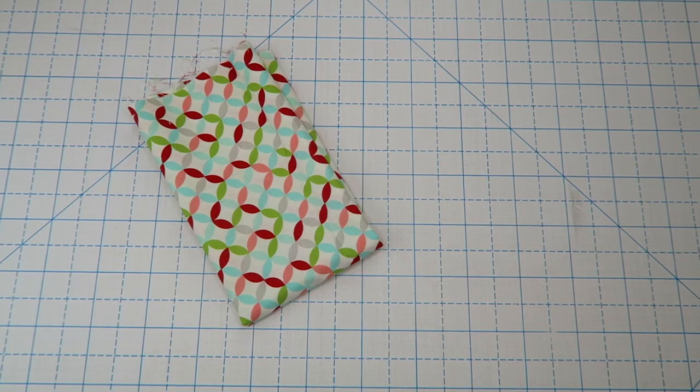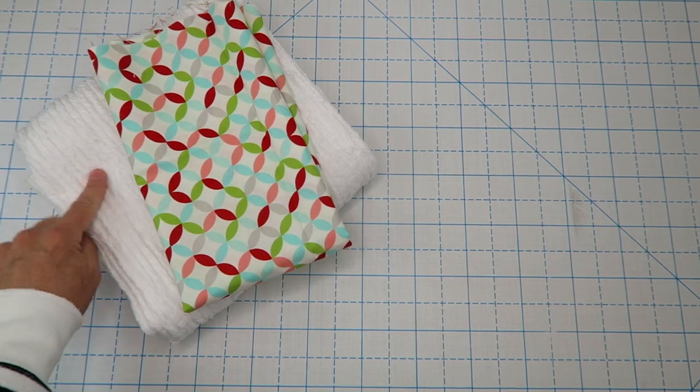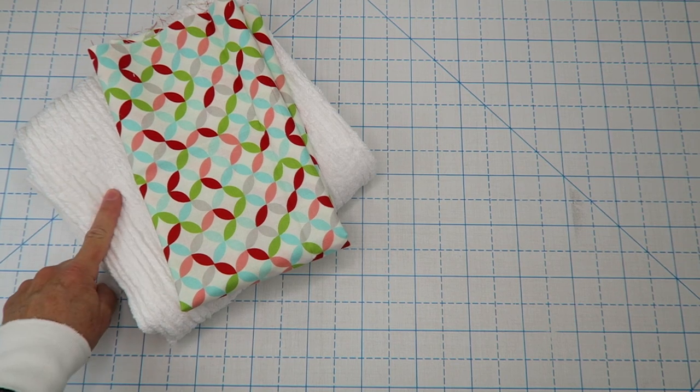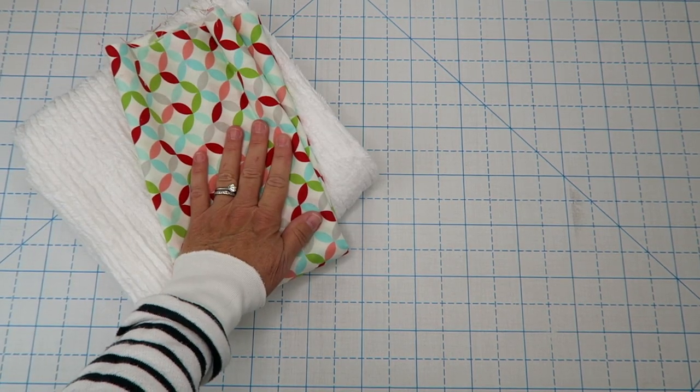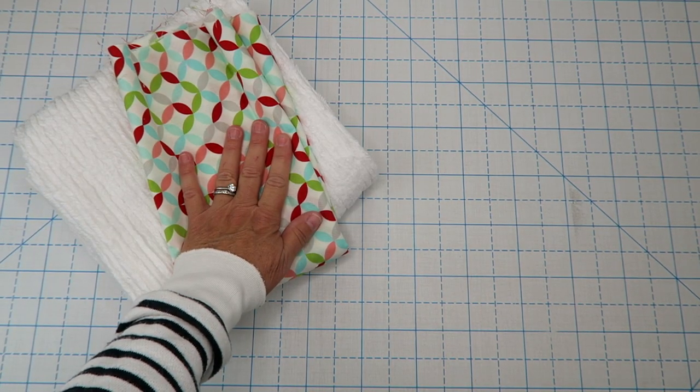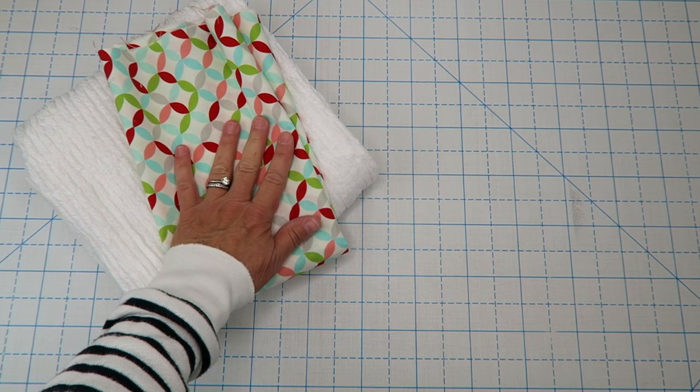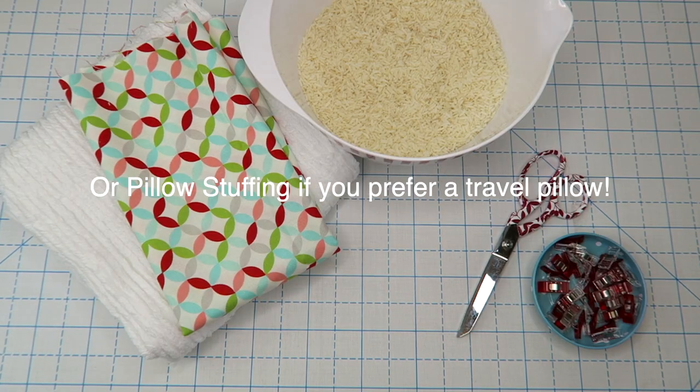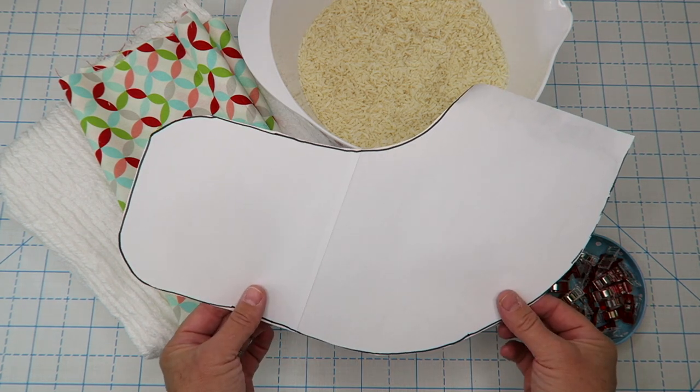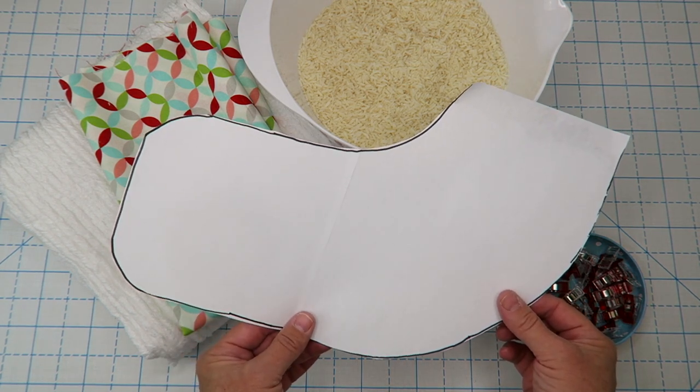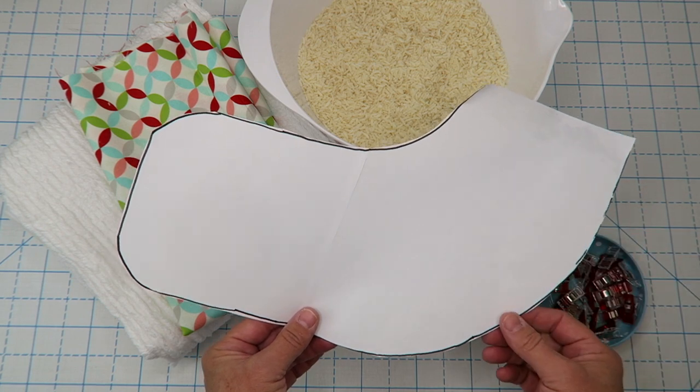Here's what you're going to need. A half a yard of fabric. I'm actually going to use some of the terry chenille that I used for my last video and some quilting cotton, but you can use any cotton fabric that you like. Cotton is microwavable so that's what you're going to want to stick with. Rice, some basic sewing supplies, and this fun template which you'll be able to find a link for in the description box below the video.